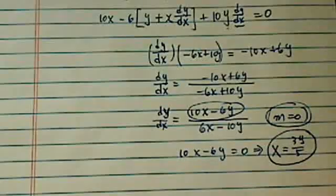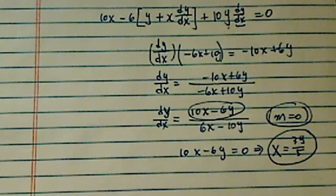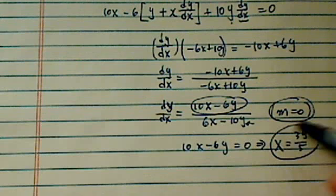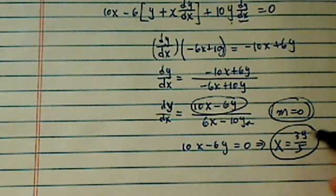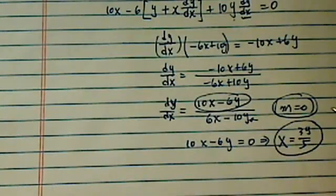Now, this is only true for a horizontal one. If the teacher on the test is asking for a vertical one, of course you're going to be setting the bottom equal to 0. For our case, x equals 3y over 5 for the horizontal line.